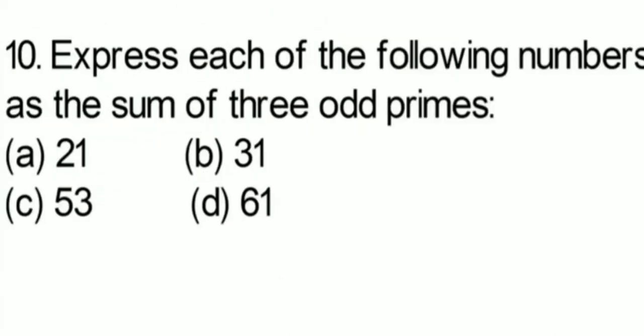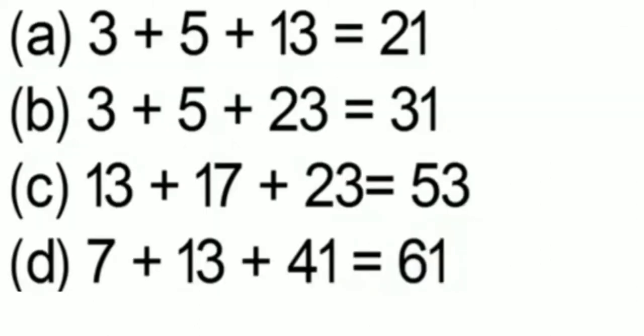Question number 10: express each of the following numbers as the sum of 3 odd primes — 21, 31, 53 and 61. We need to write 3 odd prime numbers. So: 21 = 3 + 5 + 13, all three are odd and prime; 31 = 3 + 5 + 23; 53 = 13 + 17 + 23; and 61 = 7 + 13 + 41.